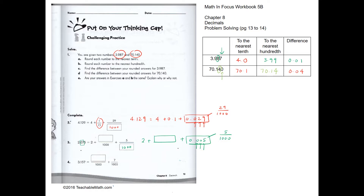We have 0.07 left over. To change 0.07 to a fraction with denominator 1000, we add a zero to make it 70, so 0.07 equals 70 over 1000. The last one: 3.157.